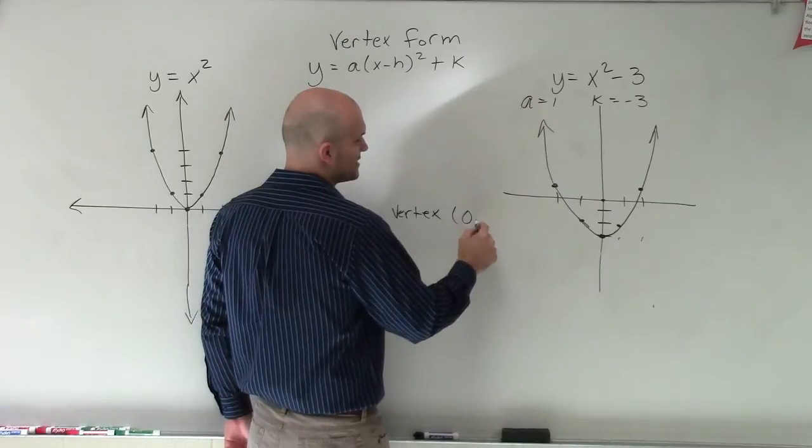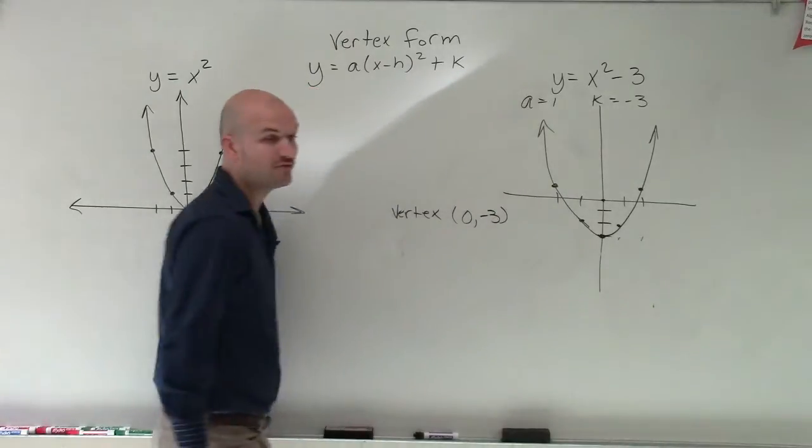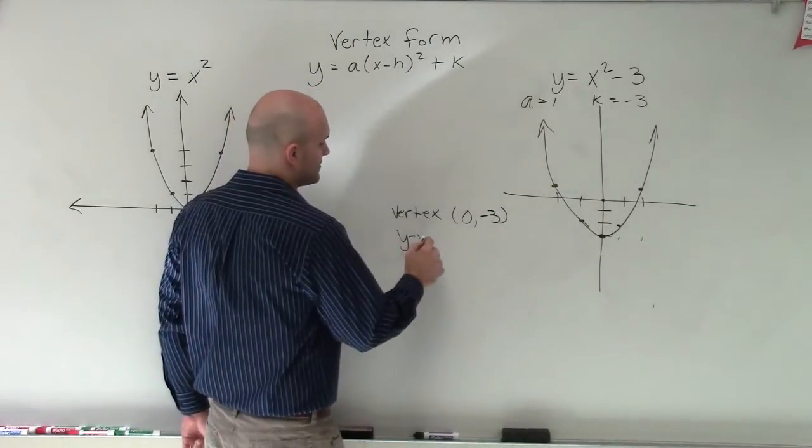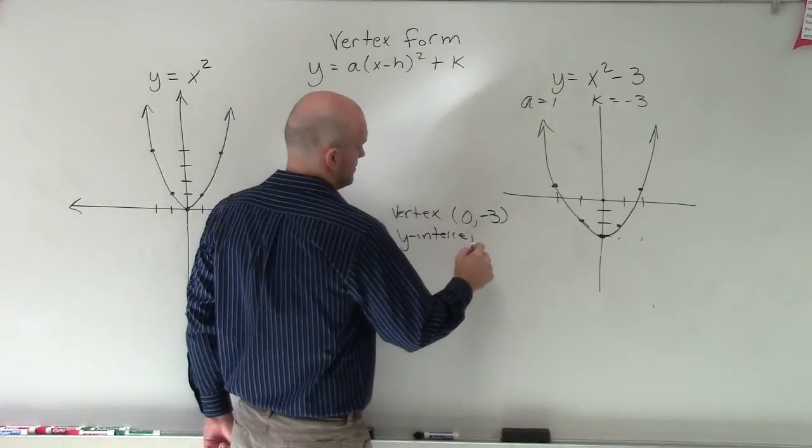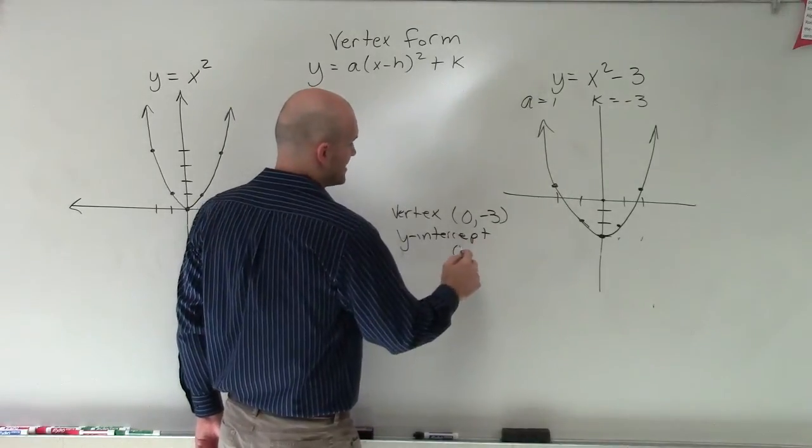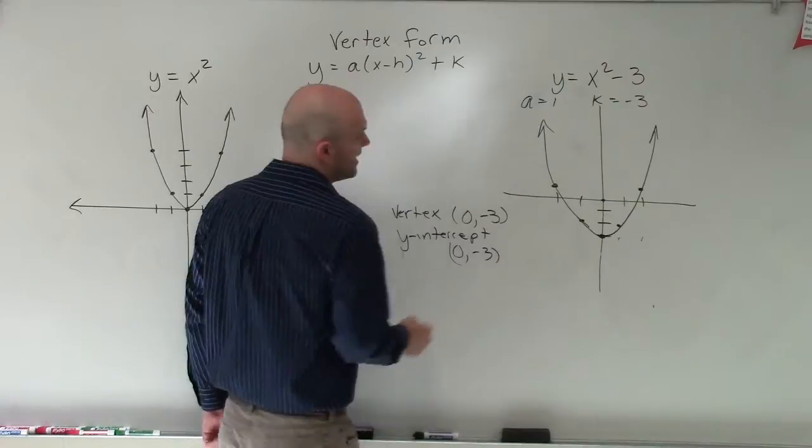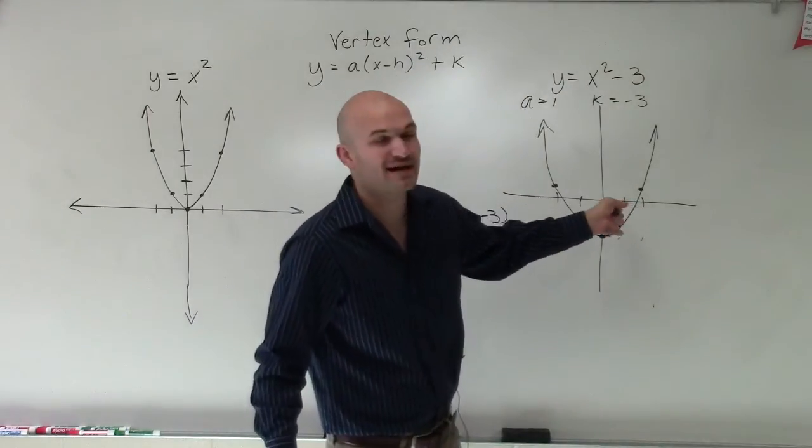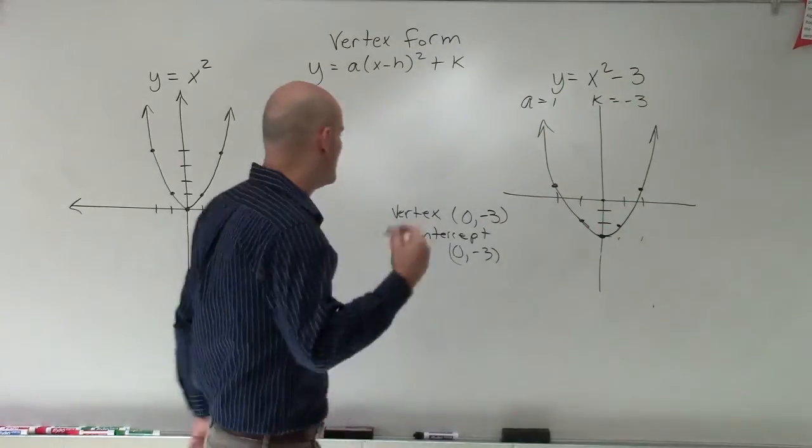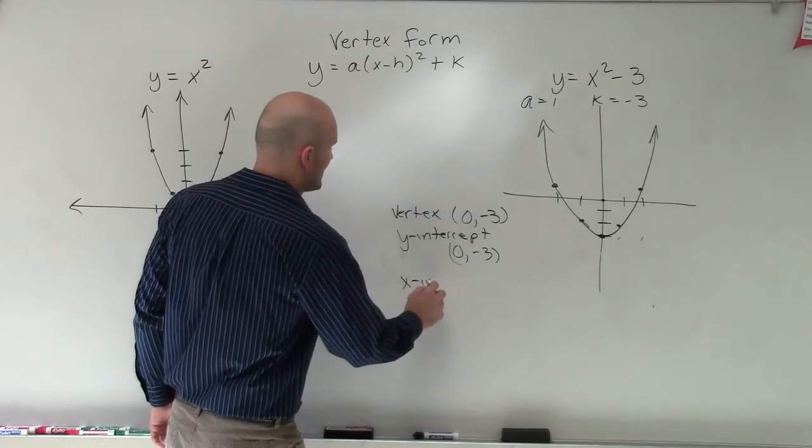My vertex is going to be at the point 0, negative 3. My y-intercept is going to be at 0, negative 3. And my x-intercepts, you guys can see the x-intercepts don't add an exact value. But we'll talk about how to find those exact values later.